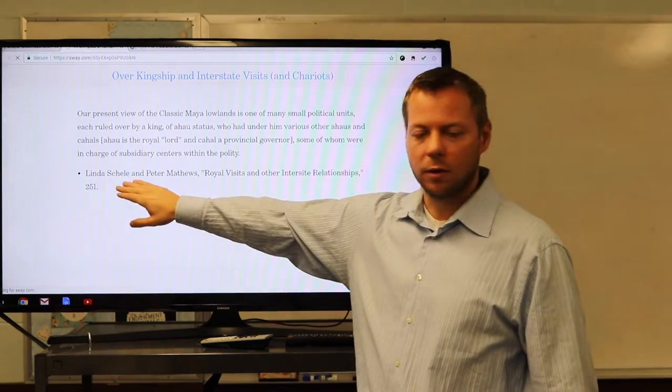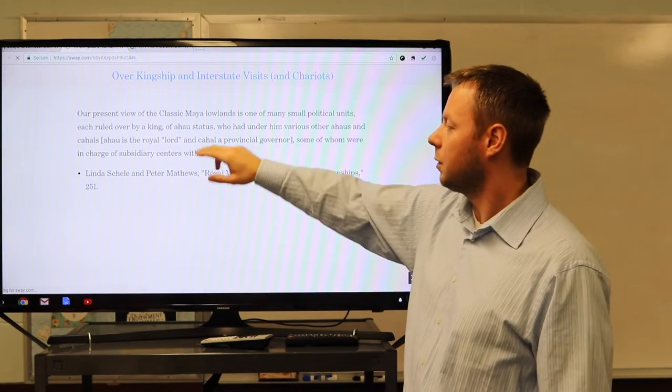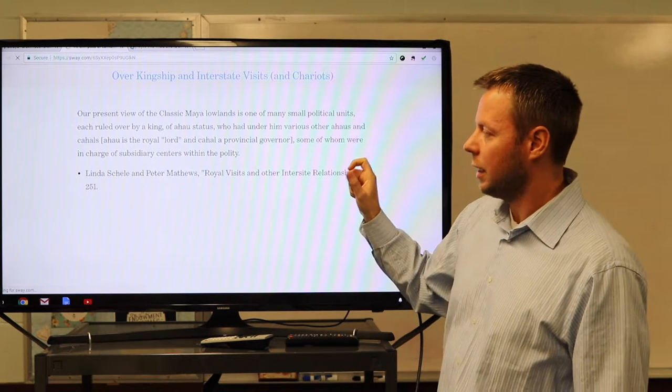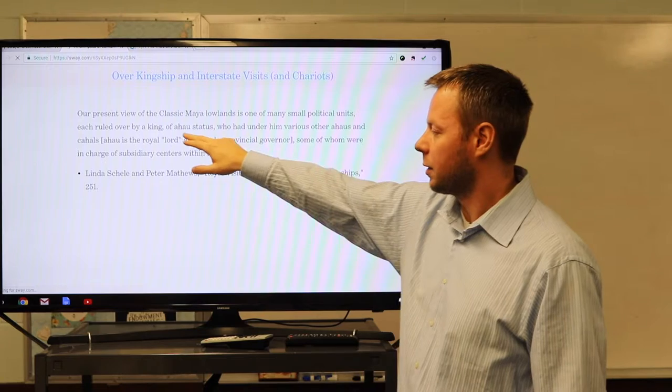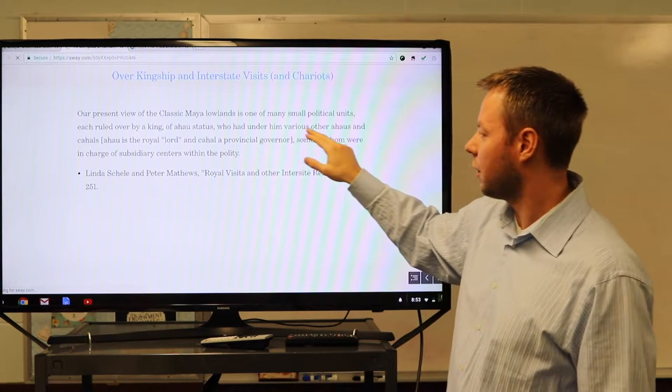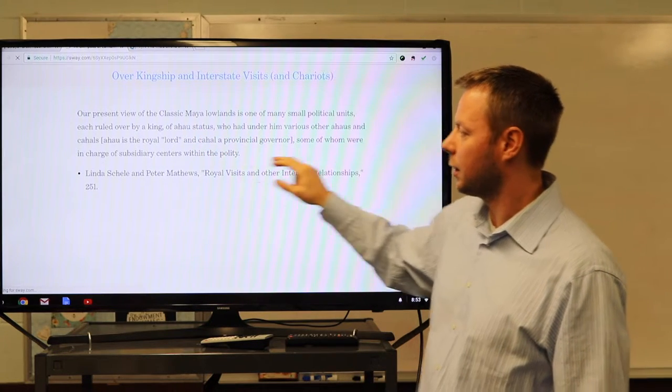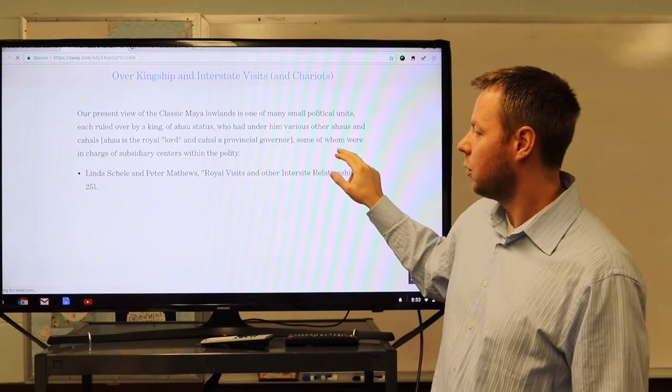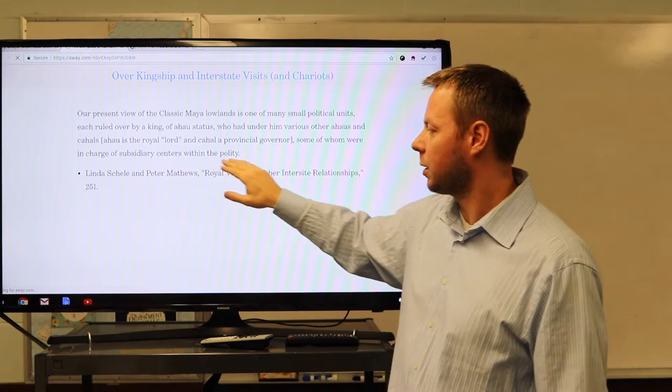Remember Linda Schele, we've quoted a lot from her as a scholar and Peter Matthews, our present view of the classic Maya lowlands is one of many small political units, each ruled over by a king of Ahau status, who had under him various other Ahaus and Cahals. Ahaus were a lord, Cahals a provincial governor, some of whom were in charge of subsidiary centers within the polity. So, again, scholars finding the same thing over kingship and under kingship.